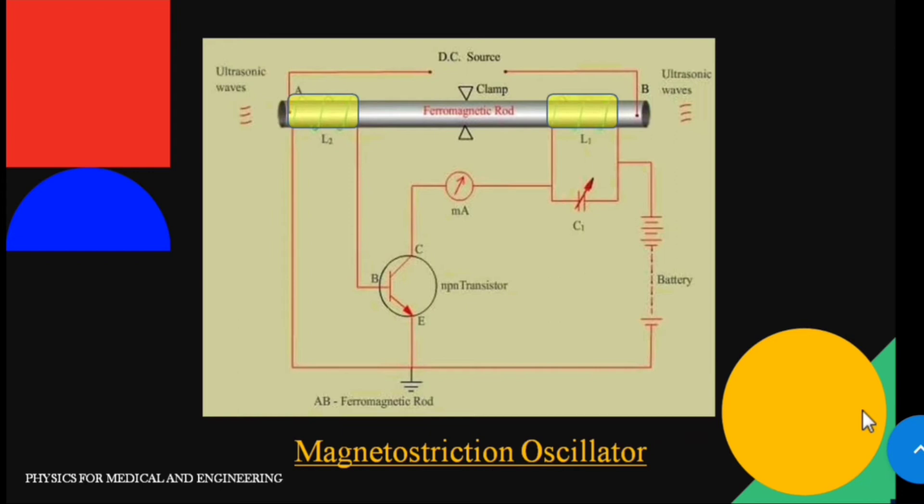Here there are two coils L1 and L2 which are wound at the ends A and B. One end of coil L2 is connected to the base of the transistor and the other end is connected to the emitter and the negative terminal of the battery.